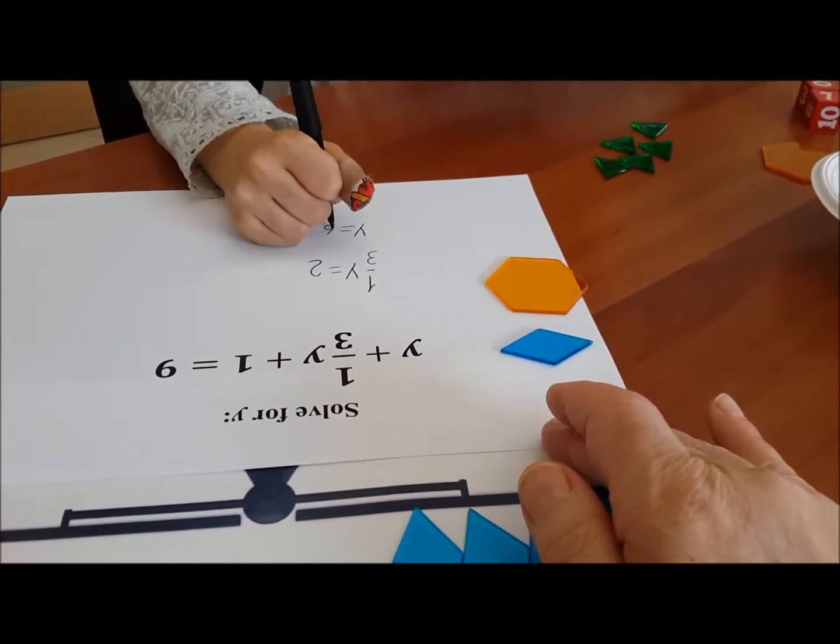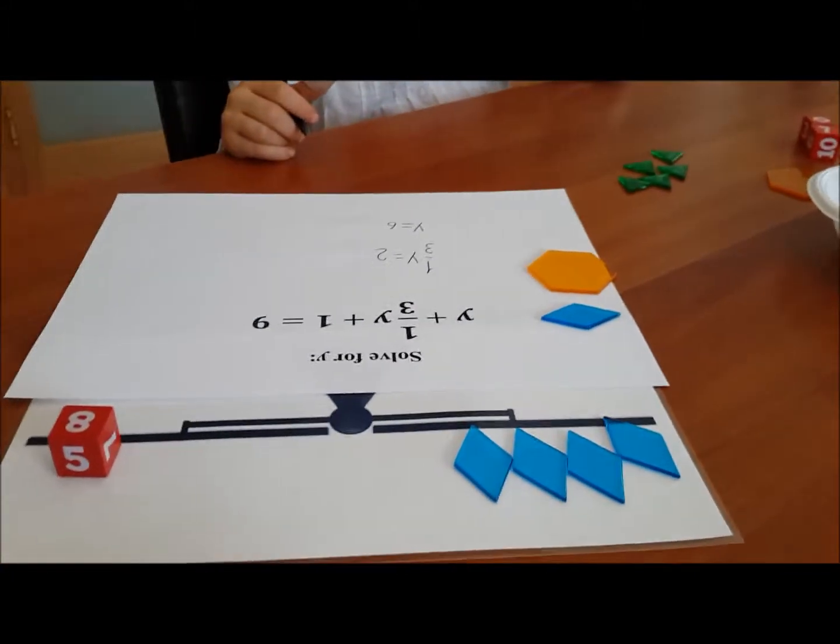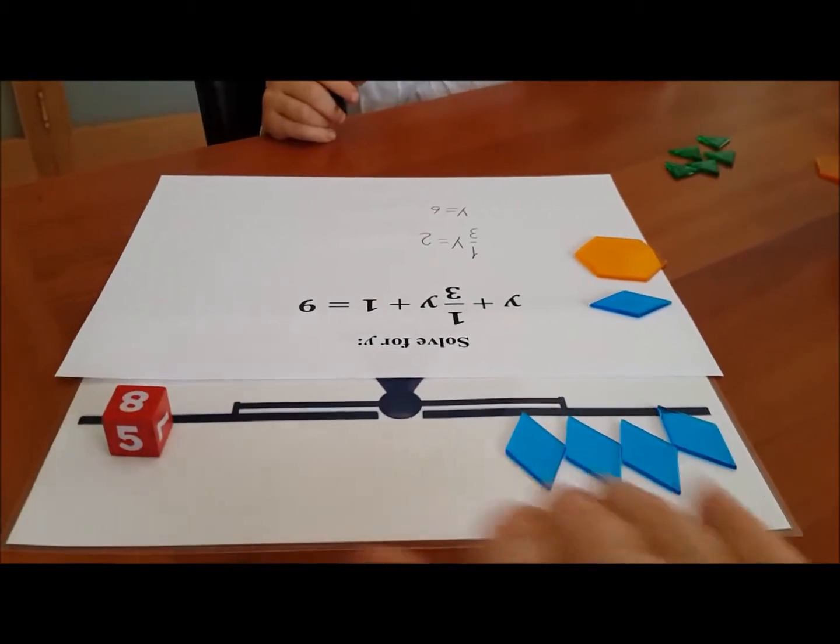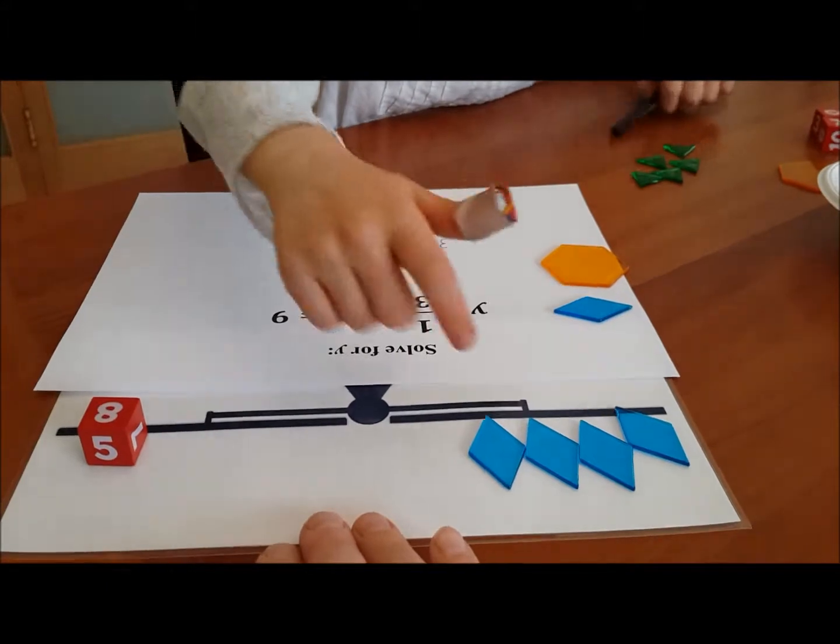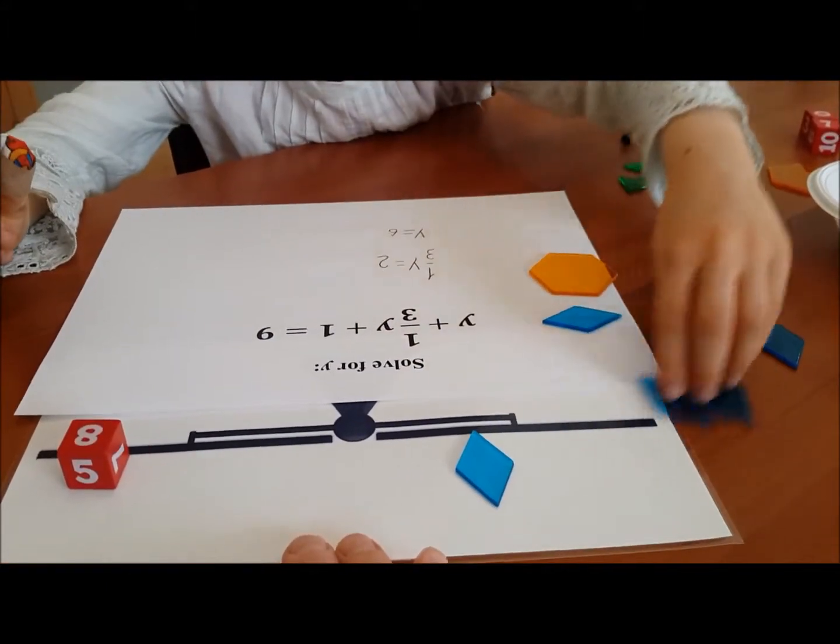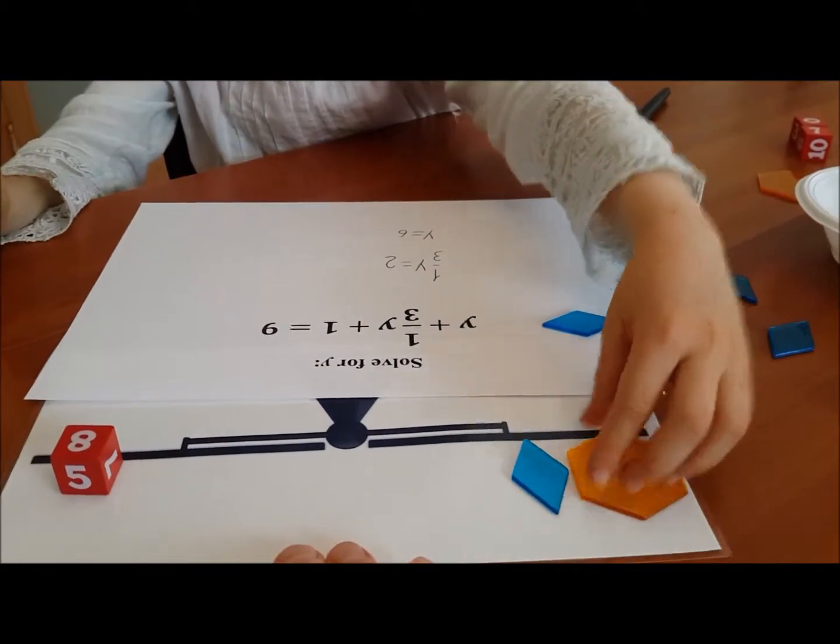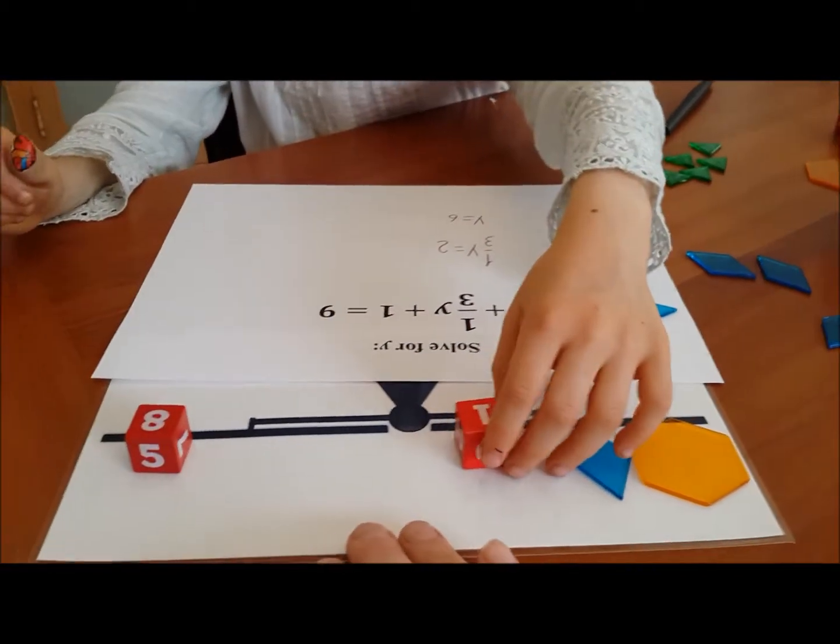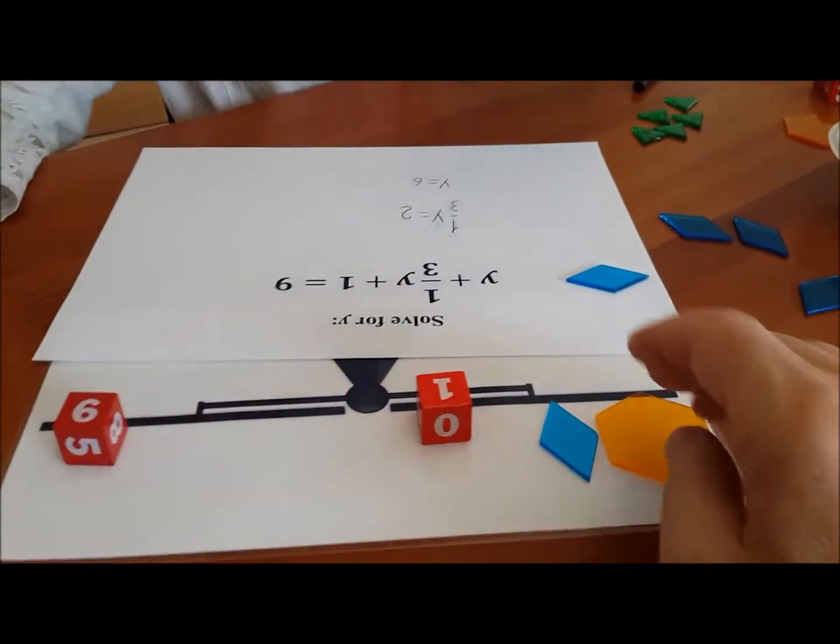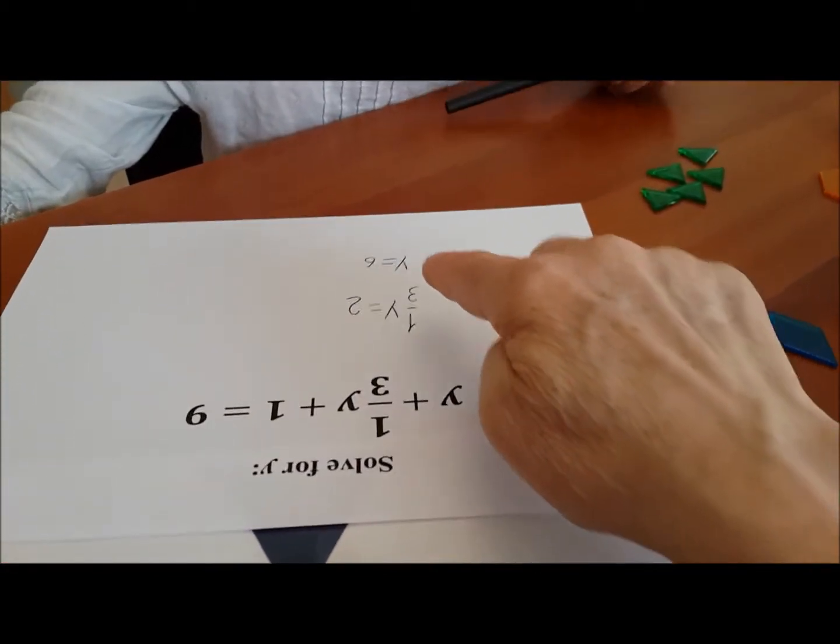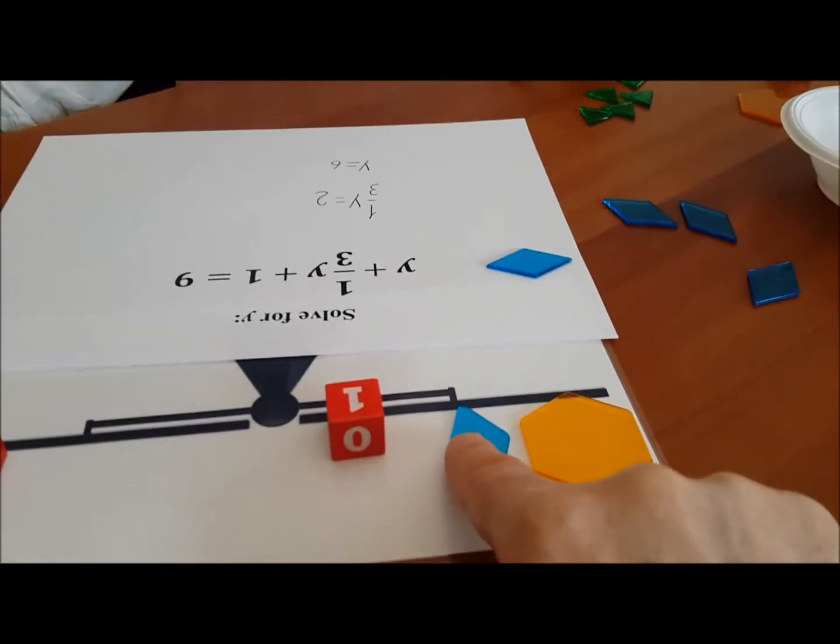Okay. You're doing very nice. However, we now need to check the problem. Would you clear the board? Clear the pieces and let's set up the original problem one more time. So you have y plus a third of y plus one equals nine. And let's see if both sides have the same value. Okay, y is six. Six. And one third of y is two.